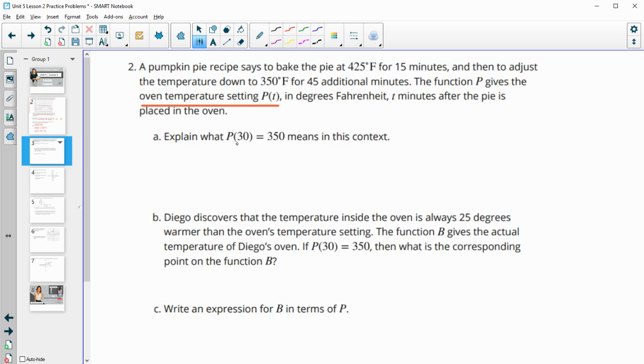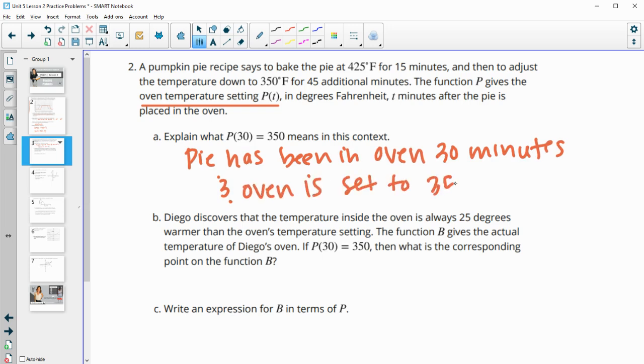So this means that when the pie has been in the oven for 30 minutes, the temperature is set to 350. So the pie has been in the oven for 30 minutes. And the oven is set to 350 degrees.